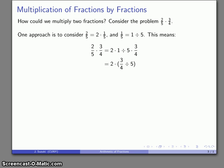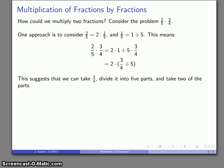I'll do the 2 times 1 because I can, and then the divide by 5 I'll relegate to after the 3/4. So this product, 2/5 times 3/4, is the same as 2 times 3/4 divided by 5. What that suggests is I might take the 3/4, divide it into 5 pieces, and then take 2 of the pieces that I produce. Let's take a look at that.